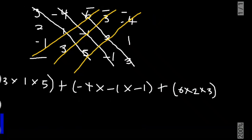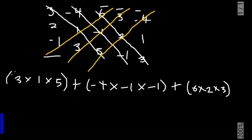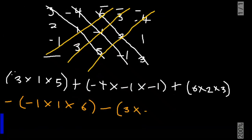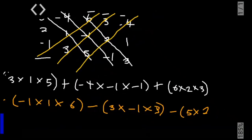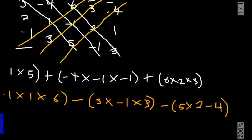Now we multiply the upward diagonals and add the negative sign before each product. We have: minus (minus 1 multiplied by 1 multiplied by 6), minus (3 multiplied by minus 1 multiplied by 3), minus (5 multiplied by 2 multiplied by minus 4). Don't forget — you are not adding the negative sign to the elements themselves, only before the product of the upward diagonal.